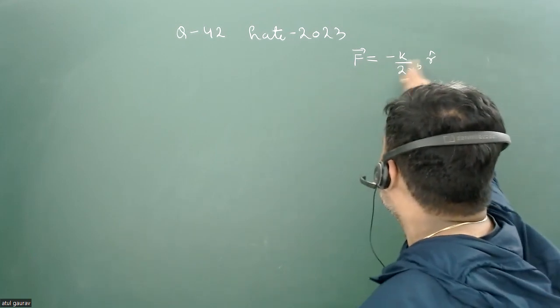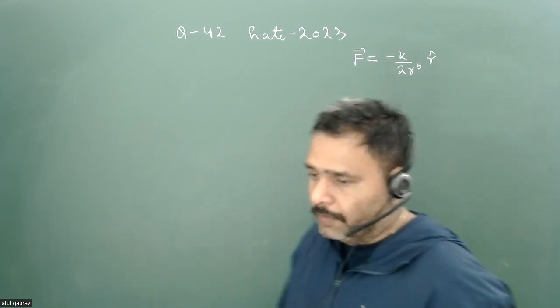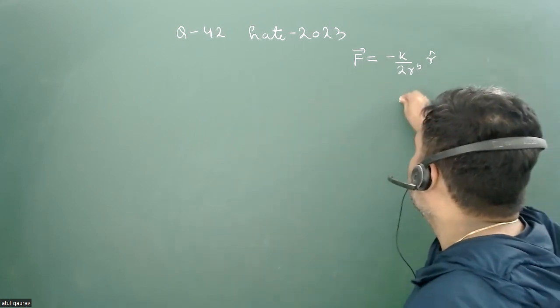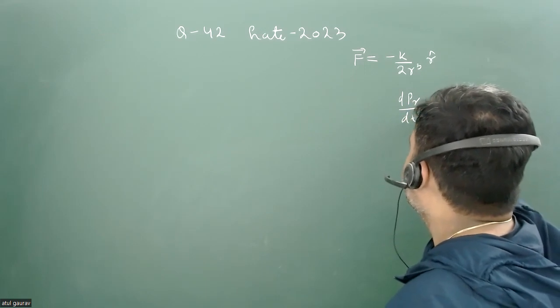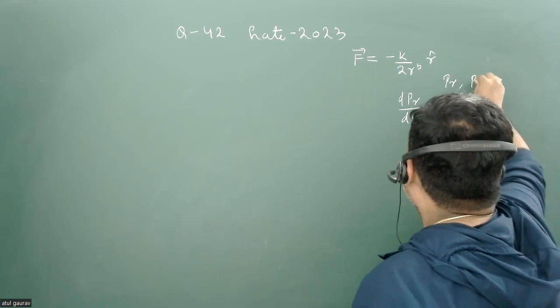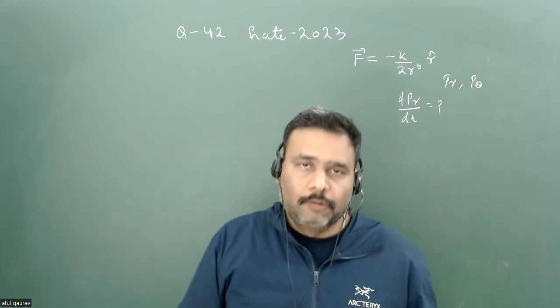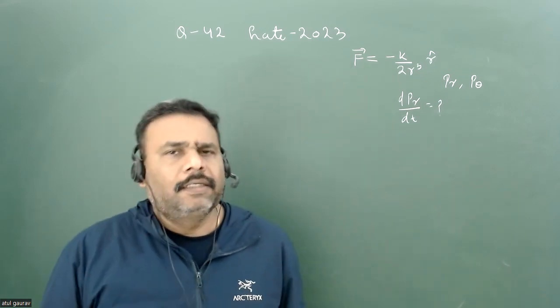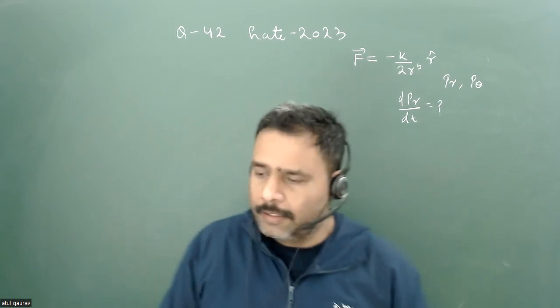It is given that the force in the radial direction is minus k over 2r³, and it is asked what will be the value of dpr/dt, where pr and p_theta are the conjugate momentum for r coordinate and theta coordinate. The system is moving in a two-dimensional plane.